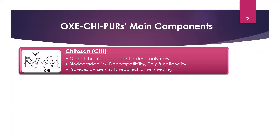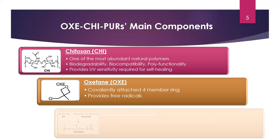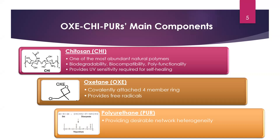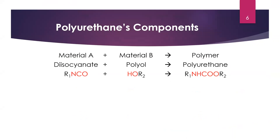This self-healing polymer has three main components. The first is chitosan, the most abundant natural polymer — it is biodegradable, biocompatible, has poly-functionality, and provides UV sensitivity required for self-healing. The second is oxetane, a covalently attached four-membered ring; when micro-cracks form, this ring is broken, providing free radicals that are highly unstable. The third component is the backbone, which is polyurethane — produced by reacting an NCO group with a material containing an OH group to produce urethane.